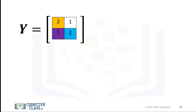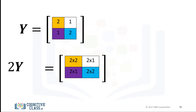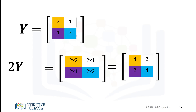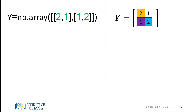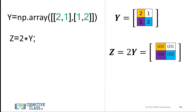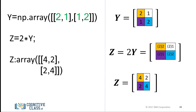Multiplying a NumPy array by a scalar is identical to multiplying a matrix by a scalar. Consider the matrix Y. If we multiply the matrix by the scalar 2, we simply multiply every element in the matrix by 2. The result is a new matrix of the same size where each element is multiplied by 2. We first define the array, then we multiply the array by a scalar and assign it to the variable Z. The result is a new array where each element is multiplied by 2.